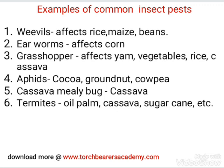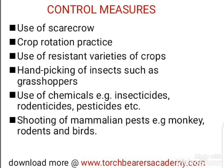Grasshoppers are biting and chewing insects, so they feed on leaves, flowers, and fruits. Aphids and capsids feed on cocoa, groundnut, and cowpea. Cassava mealybugs feed on cassava and are the most common pests of cassava. Termites, which you may have seen around as termite mounds, feed on oil palm, cassava, and sugar cane.